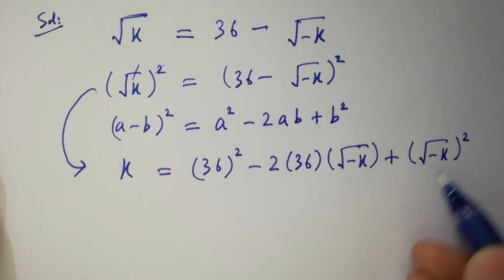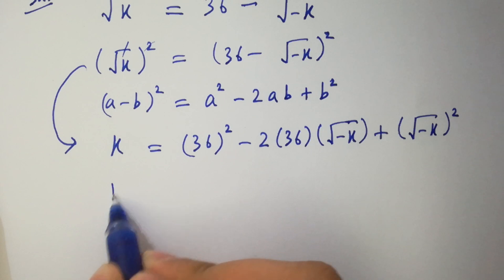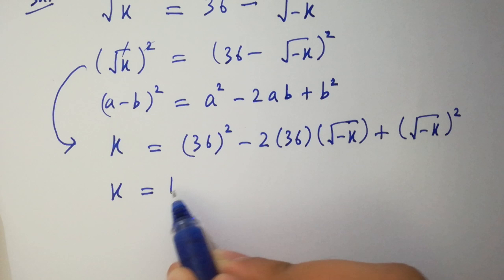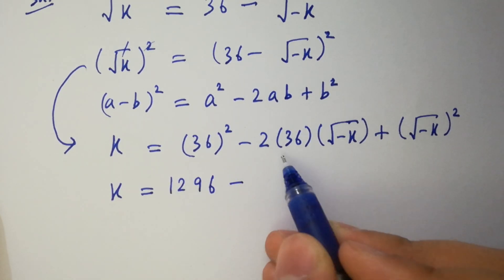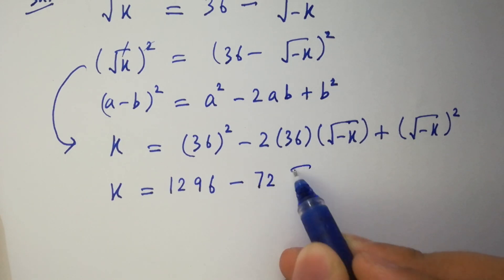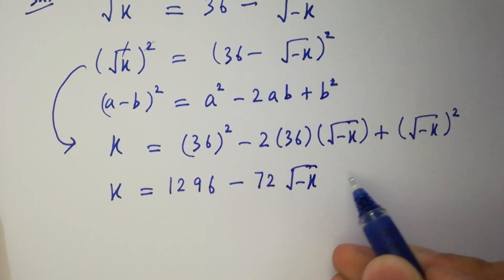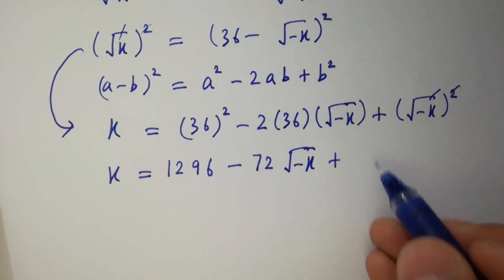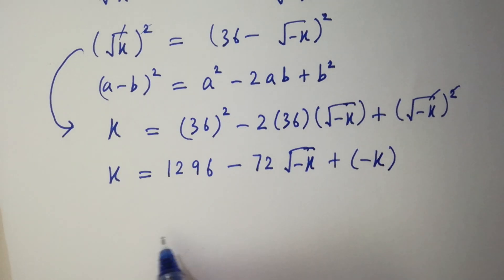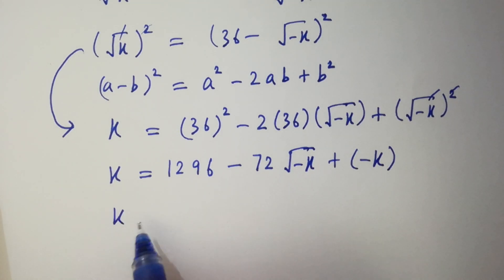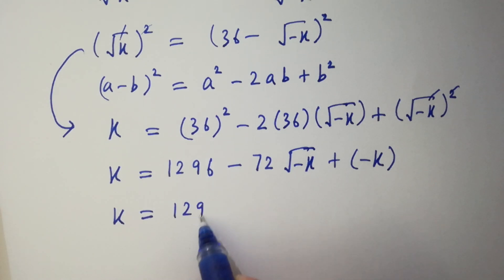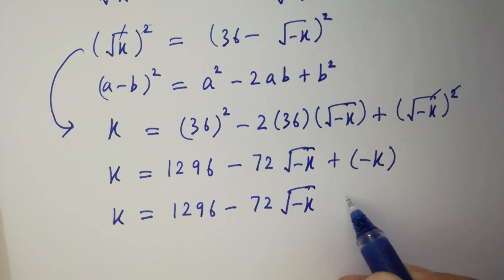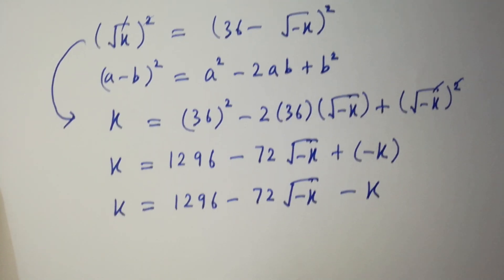In the next step, k equals 36 times 36 is 1296, minus 2 times 36 is 72, times square root of minus k, and here the square cancels from square root giving minus k. So k equals 1296 minus 72 times square root of minus k, plus minus k.